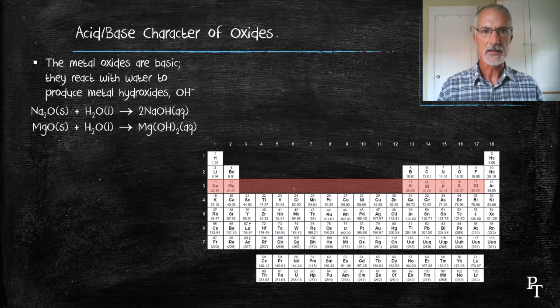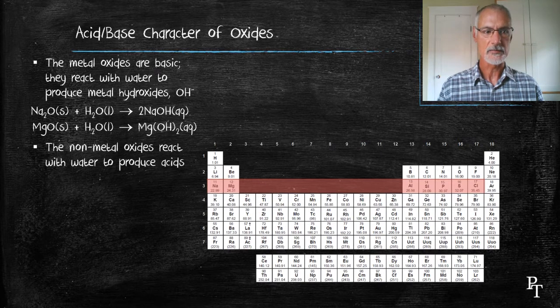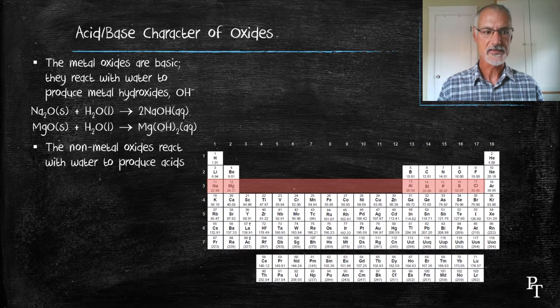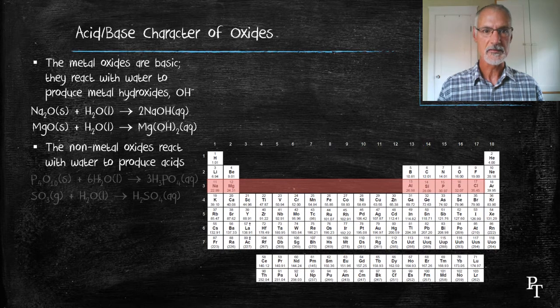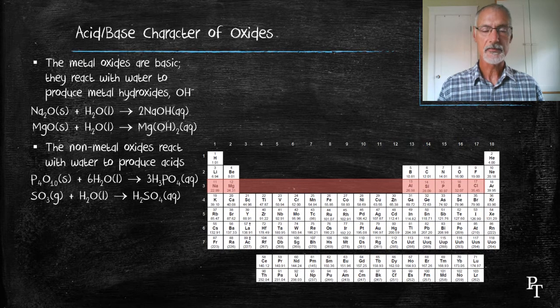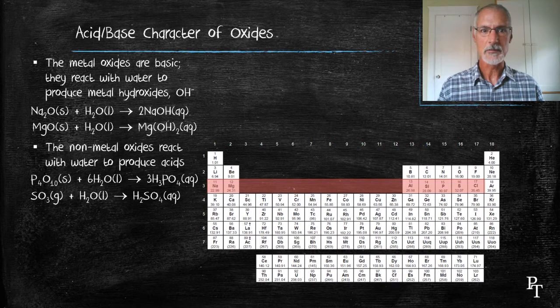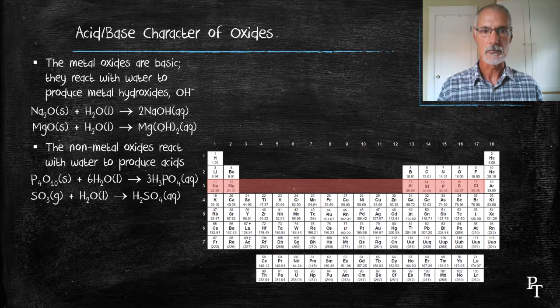However, if I take my non-metal oxides and react them with water, I produce acids. In the first situation with phosphorus oxides, I produce phosphoric acid. We perhaps might recognize this as one of the ingredients listed in several soft drinks. And the latter one, sulfur trioxide in water, produces sulfuric acid, a much stronger acid.